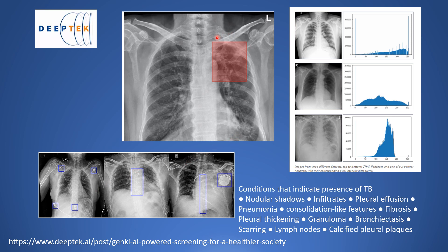They have shown an image with an abnormality, and if you look at the conditions that can indicate the presence of TB, there are many abnormalities that could be present in a chest X-ray image. Another challenge they overcame is that different X-ray machines produce different image qualities — there can be noise, and the test dataset images can be totally different from the training dataset. To address this, they introduced a lot of augmentations.